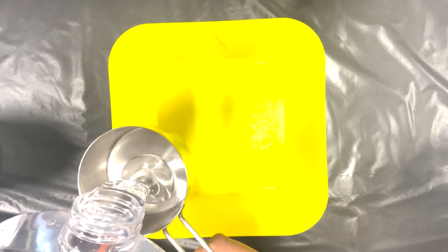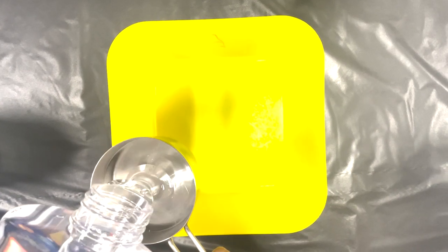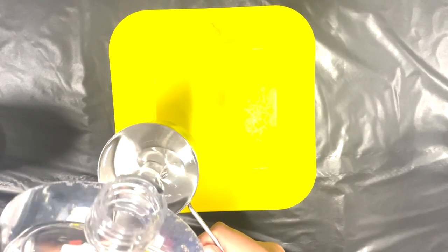First we're going to grab our container and put in Elmer's clear glue. You can also use white glue if that's what you have. We're going to grab our half a cup and fill that all the way up.